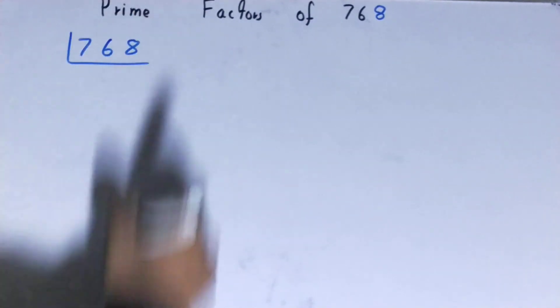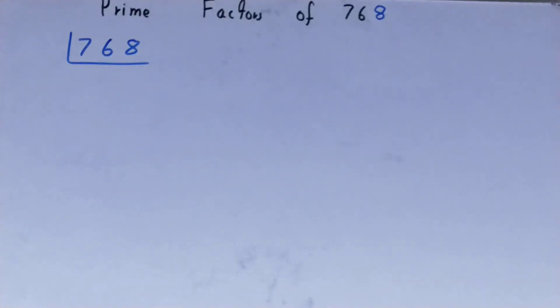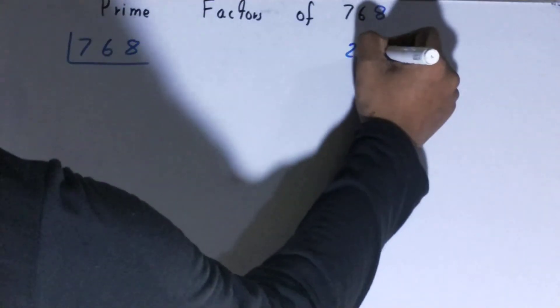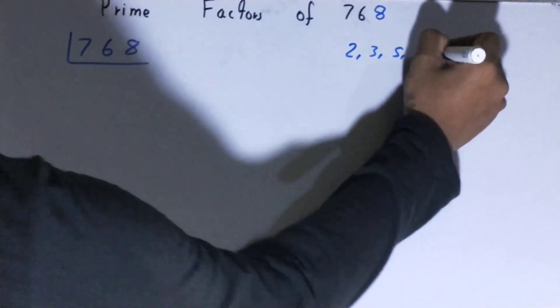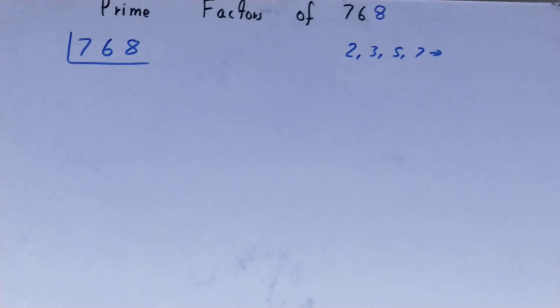Before solving this, you must know what prime numbers are. Prime numbers are numbers that are divisible by 1 and the number itself, like 2, 3, 5, 7, and so on.